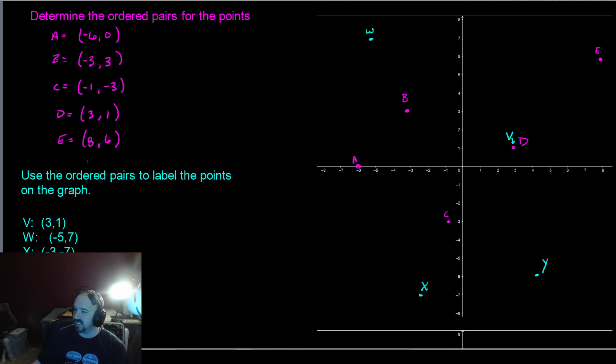Finally, Z is 0, 0. We always start at 0, 0 in order to branch out and label our points, and so 0, 0 is the origin. That's right smack dab where the two meet.